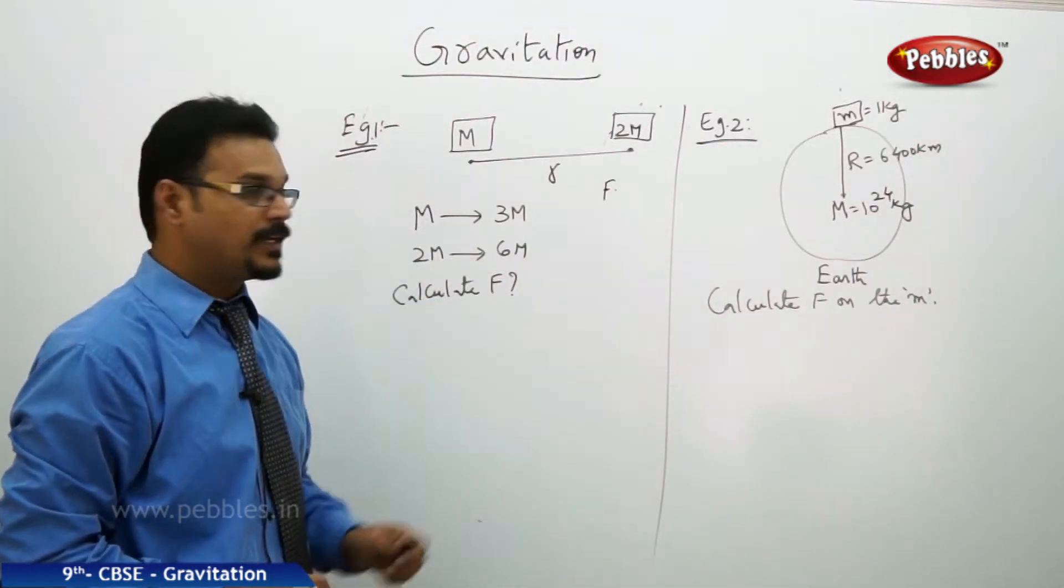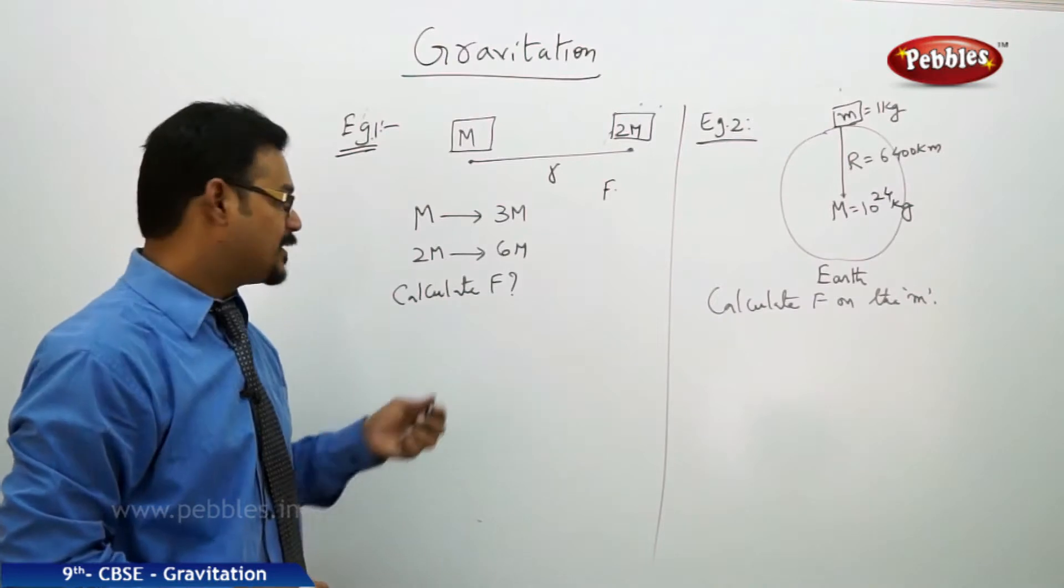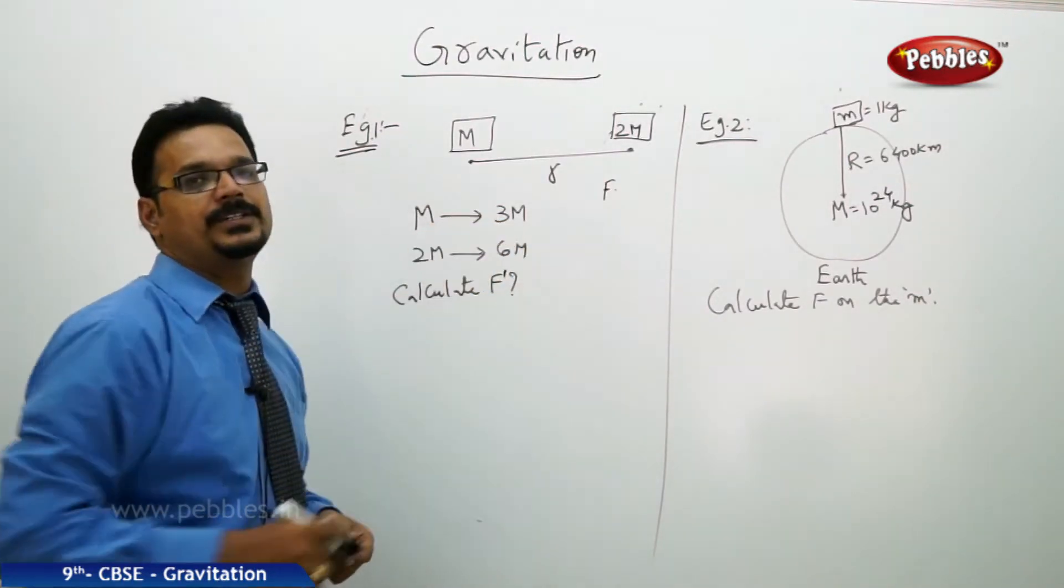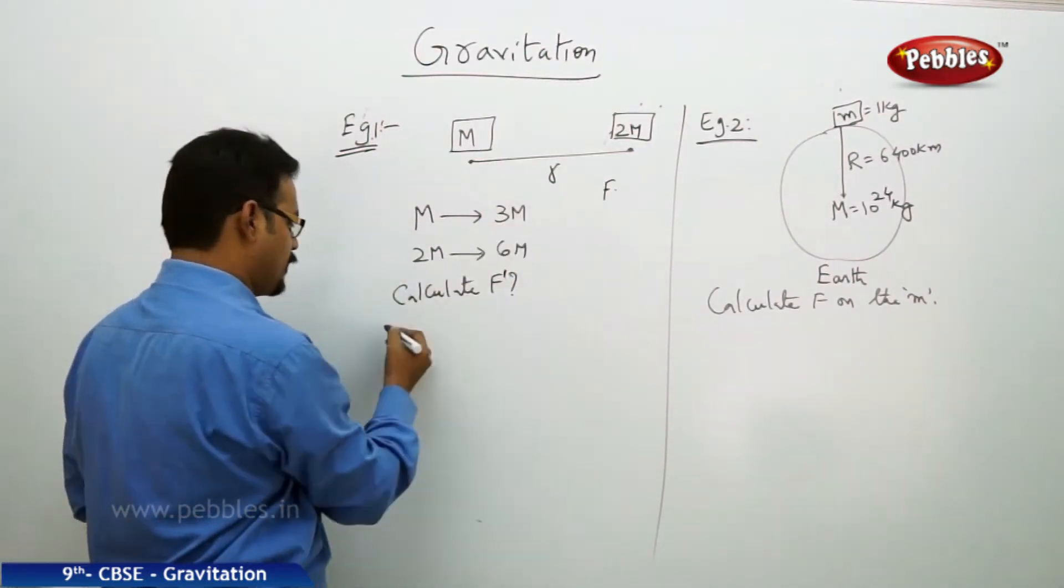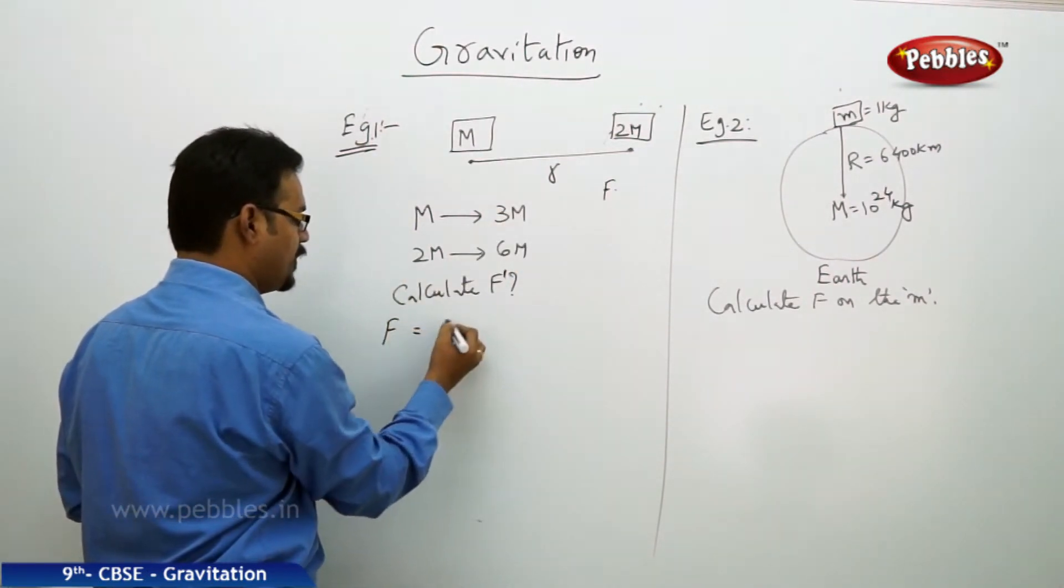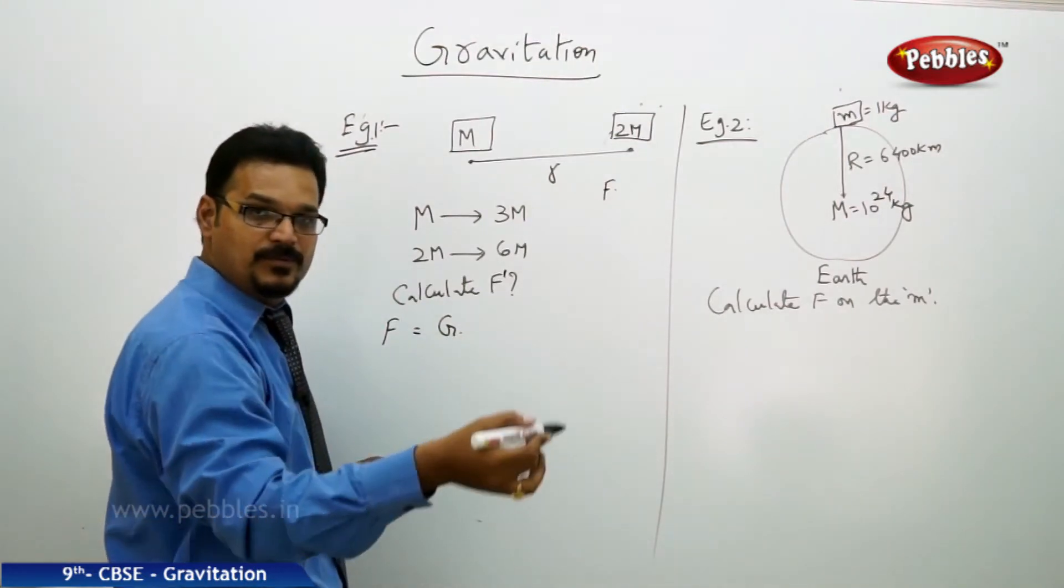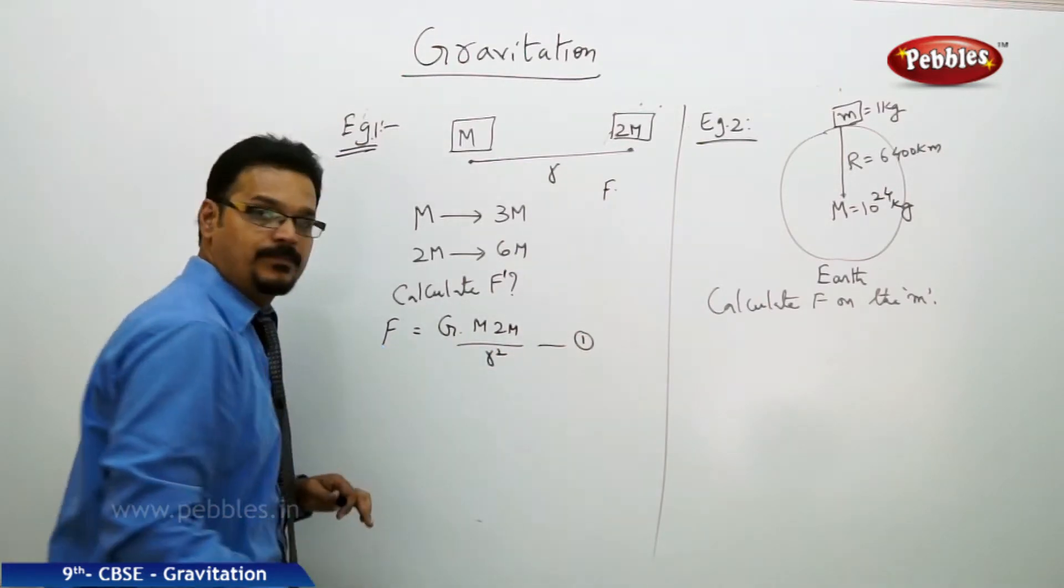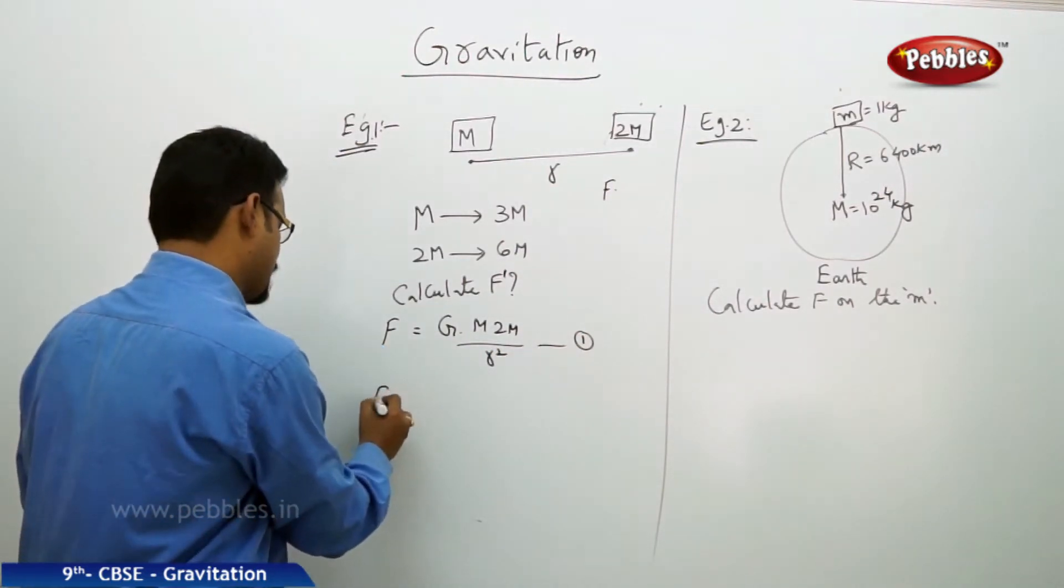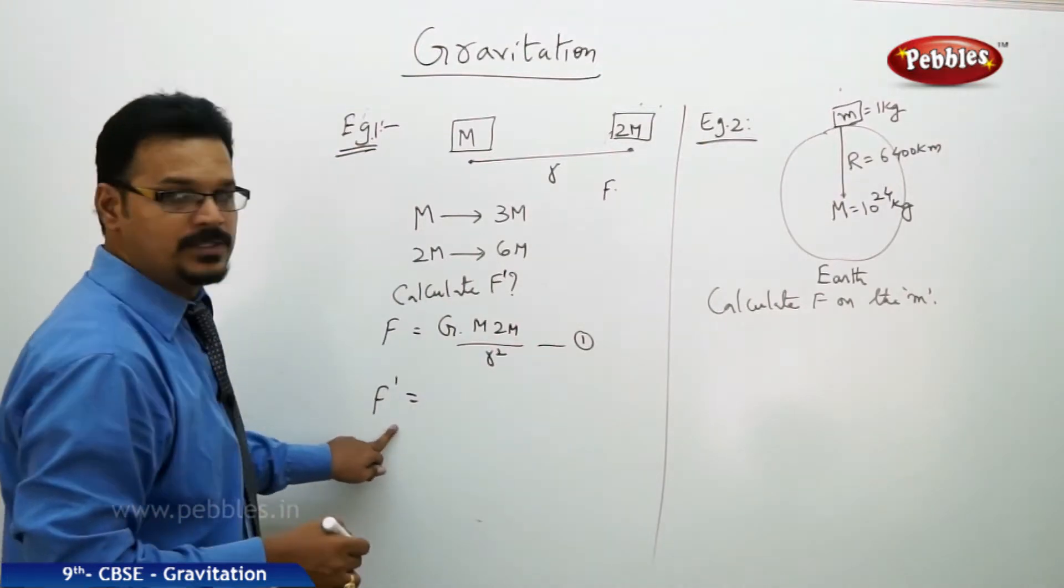What is the new force f dash? This is the question. So start writing the Newton's law of gravitation formula: f equal to G m1 m2 by r square. So m into 2m by r square, this is equation 1. Now equation 2, f dash, new force has arrived because mass changes to 3m.